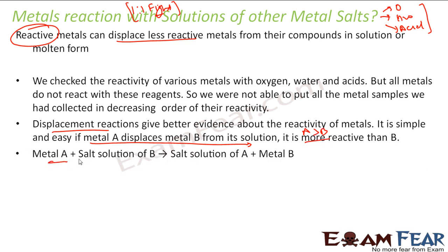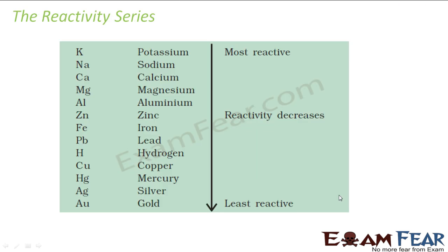So if I have metal A plus solution of metal B, and A kicks metal B out from the solution, that means A is more reactive than B. With this rule, scientists have done a lot of experiments and they have found the reactivity series.